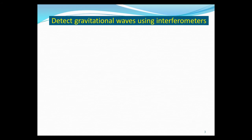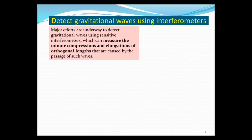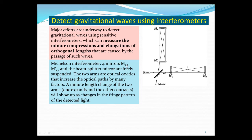Now, we can detect this longitudinal elongation and stretching and transverse compression by measuring the minute compressions and elongations in the orthogonal directions caused by the passage of the wave. What we can do is use a Michelson interferometer with two pairs of mirrors and a beam splitter. The two arms are optical cavities that increase optical path by many factors. A minute length change of the two arms—one expands, the other compresses—will cause the interference pattern, the fringe pattern, to change.